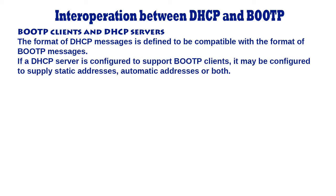If a DHCP server is configured to support BootP clients, it may be configured to supply static addresses, automatic addresses, or both. Static addresses are those that have been previously assigned by a system administrator and are stored in a database available to the DHCP server. Automatic addresses are those selected by the DHCP server from its pool of unassigned addresses.